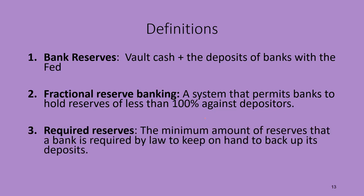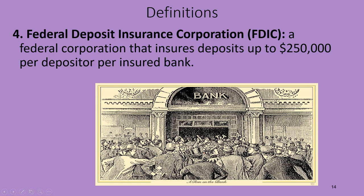There's a certain amount banks have to keep on hand by law — those are called required reserves. Required reserves are the minimum amount of reserves that a bank is required to keep on hand to back up its deposits. If a bank is required to keep 20% of deposits on hand and you put $10,000 in the bank, the $2,000 — 20% of that $10,000 — must be kept there, either in vault cash or deposits at the Fed, so you can get your money back if you want it.